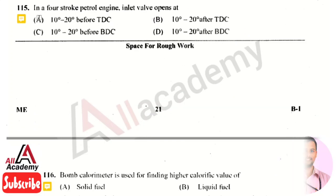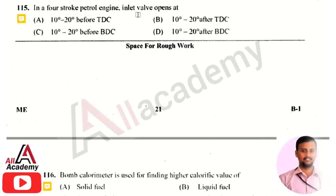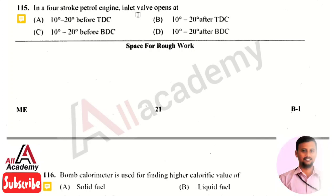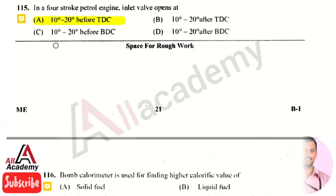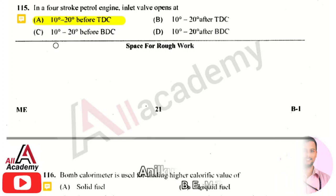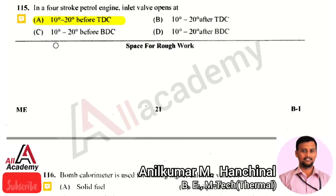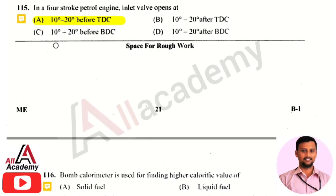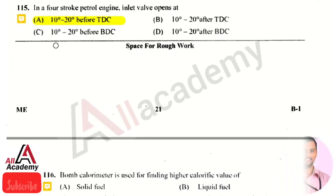In a four-stroke petrol engine, the inlet valve opens between 10 to 20 degrees before top dead center. The next question: the bomb calorimeter is used for finding the higher calorific value of both solid and liquid fuels, which can be used in a bomb calorimeter to identify their calorific value.